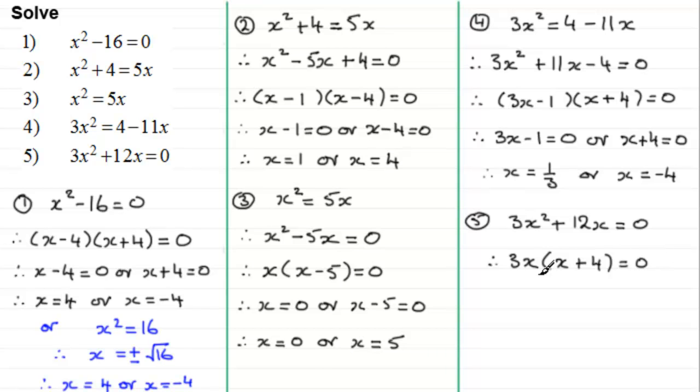In this example we've got three factors, the 3, the x, and the x plus 4. 3 can't be equal to 0, so we can leave that, but x could be equal to 0, so therefore x equals 0, or the third factor x plus 4, that can equal 0. And in the usual way, we've got x equals 0, or for this one if we subtract 4 from both sides, we've got x equals minus 4.